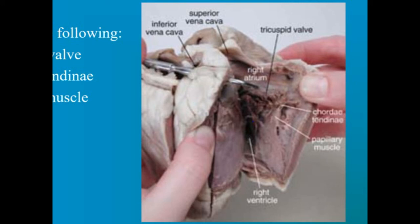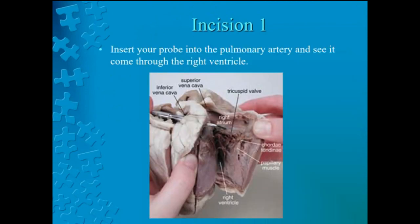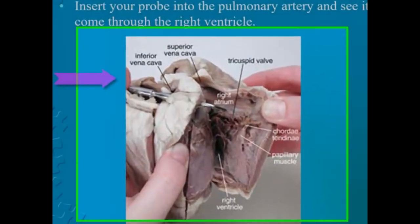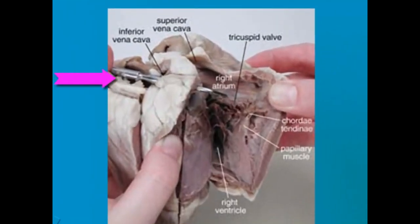Remember that the pulmonary artery is just behind and to the left of the aorta. Locate the pulmonary artery once again. After the video is paused, insert your probe into the pulmonary artery and see it come through to the right ventricle. We will pause for a moment to ensure that everyone has located the pulmonary artery.